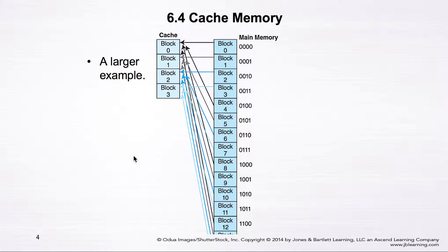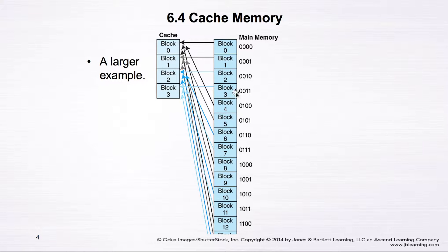Here is a larger example using the same operation. We still have 4 blocks in the cache memory, but the number of blocks in main memory is much larger. Blocks 0 to 3 map directly to the same block in cache. Block 4 in memory: 4 mod 4 equals 0, so it maps to block 0. Block 5 mod 4 equals 1, maps to block 1. Block 6 mod 4 equals 2, maps to block 2, and so on. This confirms the same direct map cache mapping method.